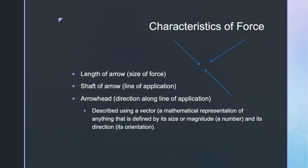Some other important characteristics of force are its point of application, its direction (which is the line of action), and its sense — whether it pushes or pulls along this line. A force is a vector quantity. A vector is a mathematical representation of anything defined by its size or magnitude and its direction. The easiest way to represent a force or any vector is to use an arrow. The length of the arrow indicates the size of the force, the shaft indicates its line of application, the arrowhead indicates its sense or direction along that line, and one end of the arrow indicates the point of application.